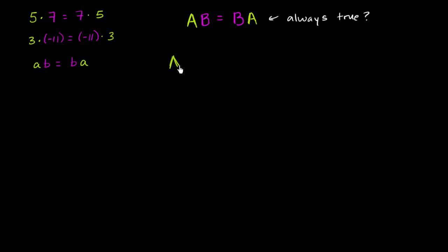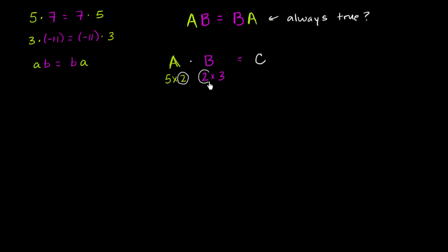Let's say matrix A is a 5 by 2 matrix, and matrix B is a 2 by 3 matrix. The product AB is going to produce a third matrix — let's call it C. This product is defined under matrix multiplication because the number of columns A has equals the number of rows B has. The resulting dimensions are the rows of A and the columns of B, so C is going to be a 5 by 3 matrix.